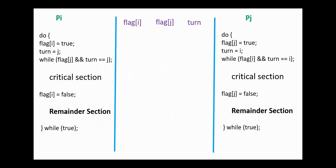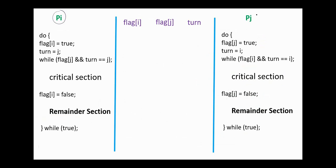To explain how Peterson solution works for two processes, we consider several cases. First, suppose process Pi wishes to enter a critical section and process Pj is executing in its remainder section. Process Pi sets flag[i] to true and sets turn to j. Since flag[j] is false — because Pj is not willing to enter its critical section — the condition evaluates to false, and process Pi is allowed to enter the critical section.